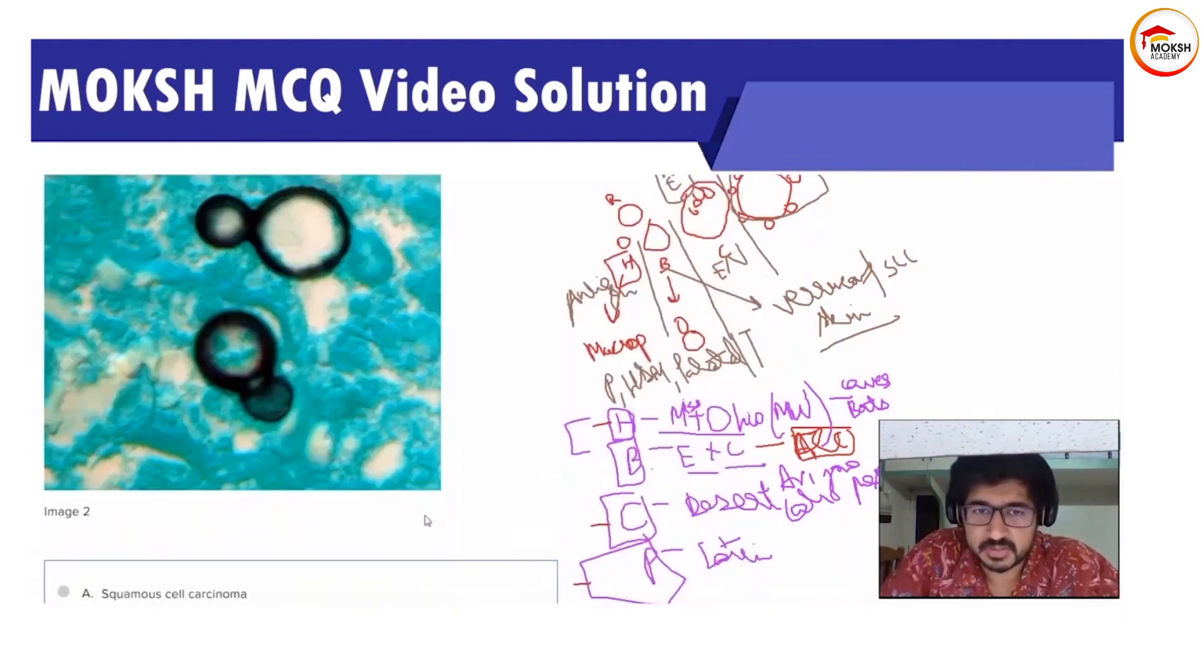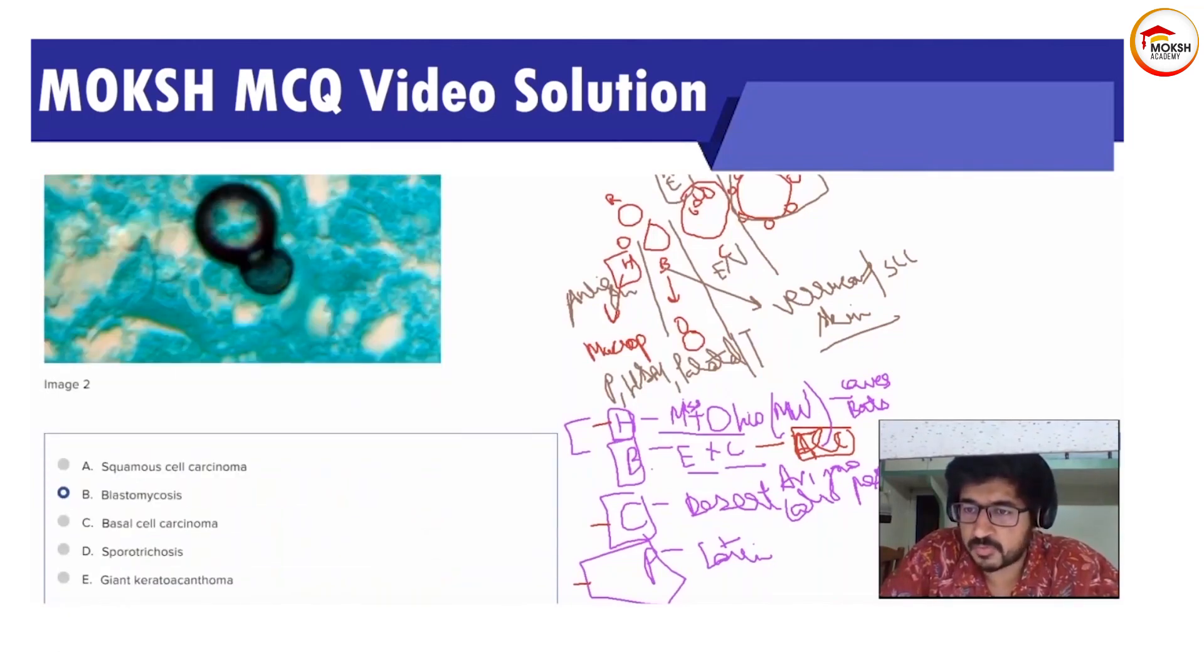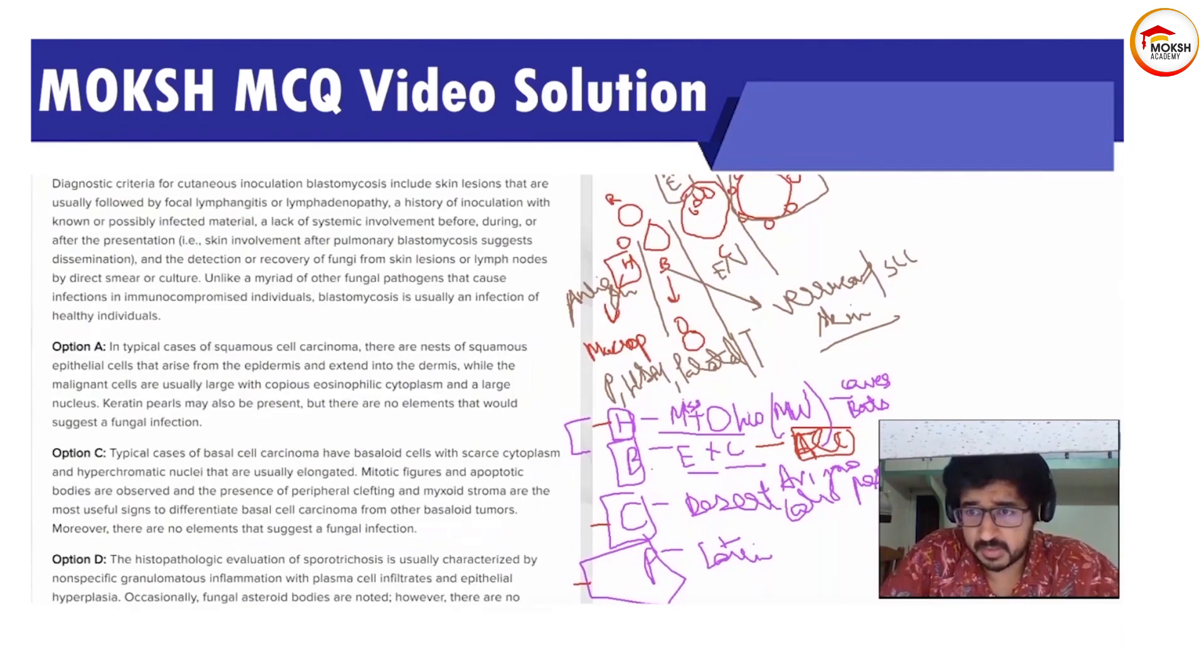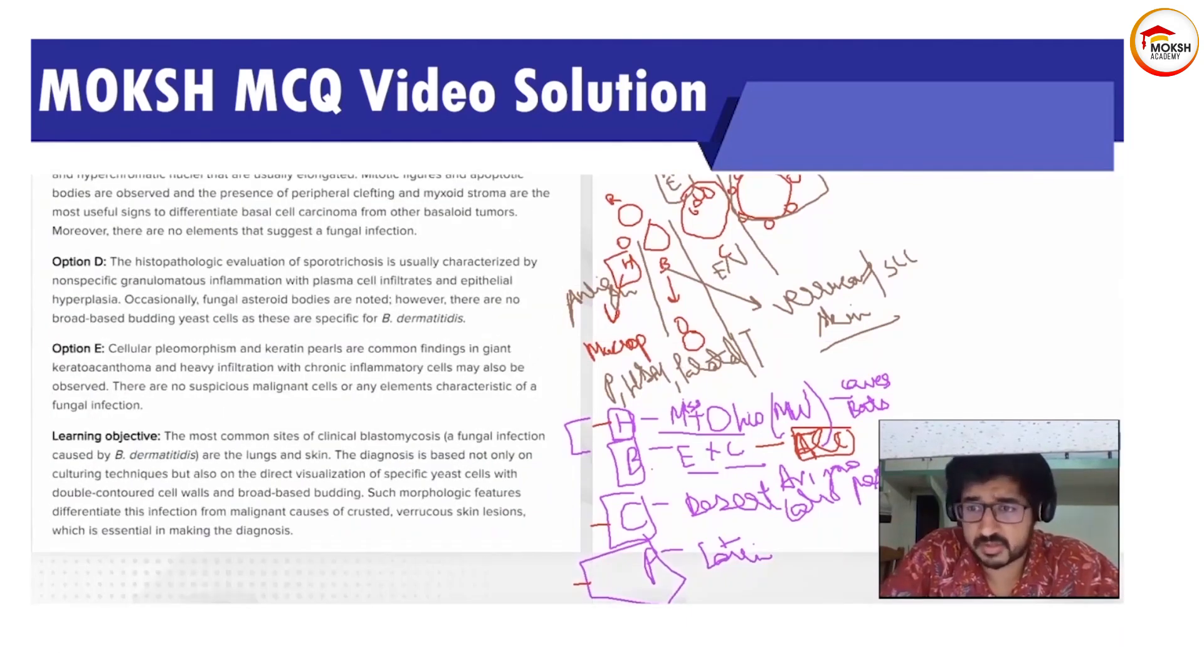Is it clear to everyone? Are all these four clear to everyone? This is very high-yield, and there is a guarantee that you will get questions out of this. If you do not get a question out of this, you might be sitting for the wrong exam. That is the level of high-yield importance of this.